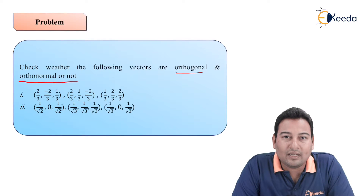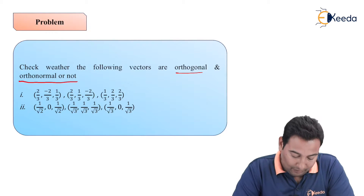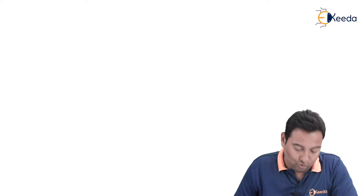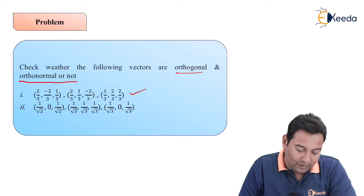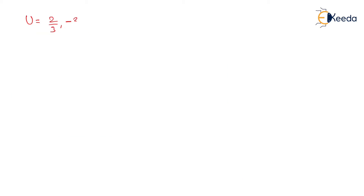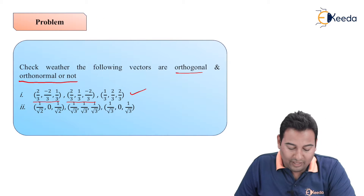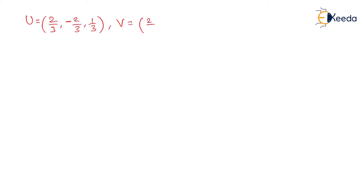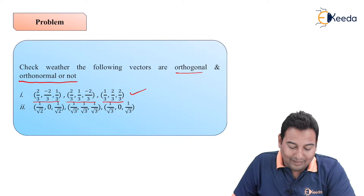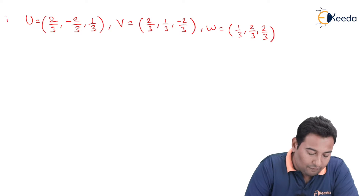It is very simple. If there are two vectors we check u dot v equals 0, but here three vectors are given. Let us name them u, v, and w. u is the first vector: (2/3, −2/3, 1/3). The second vector v is (2/3, 1/3, −2/3). And the last vector w is (1/3, 2/3, 2/3). This is our first problem — we need to check whether they form an orthogonal set.